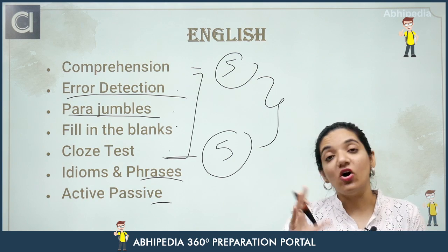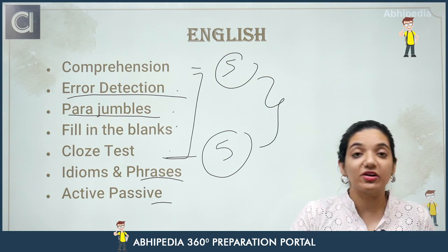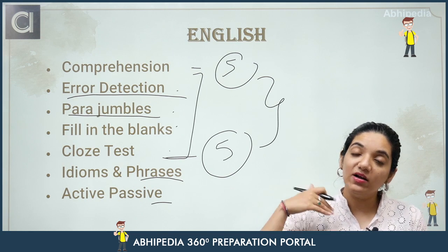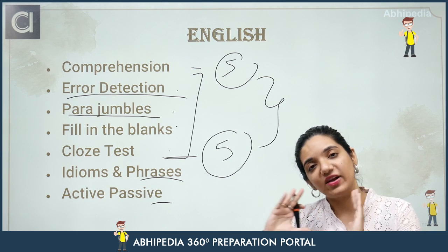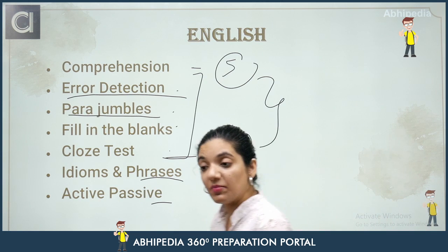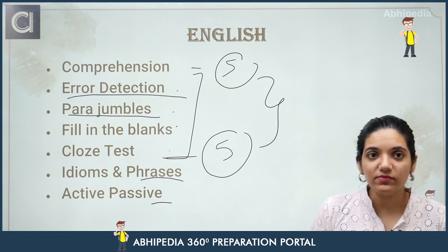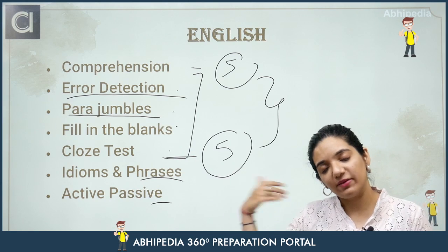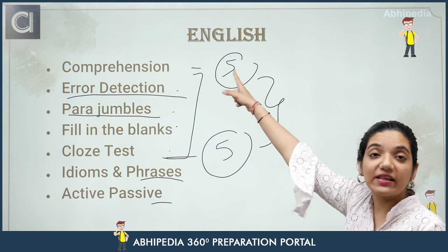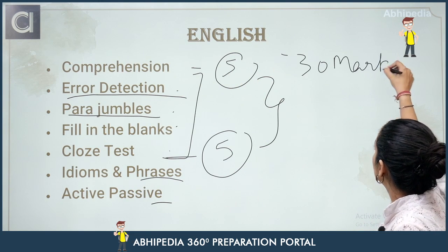Phase 1 is again a qualifying phase — you only need to qualify it. To qualify, you need to stay above the cutoff. With sectional cutoffs in mind, do the backward counting: how many questions should I attempt so that my score stays above the cutoff? Once you clear Phase 1, Phase 2 preparation requires a completely different approach — subjective writing — but what you read here will also be useful there.